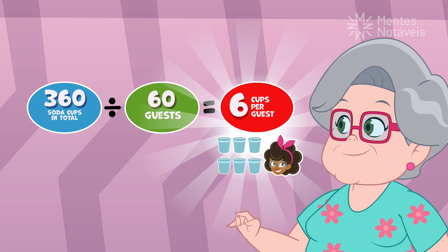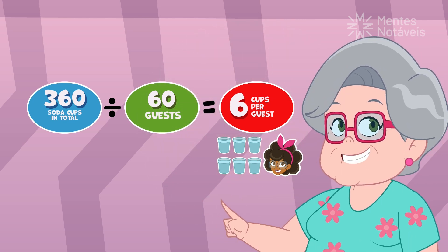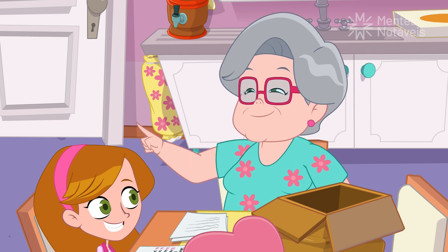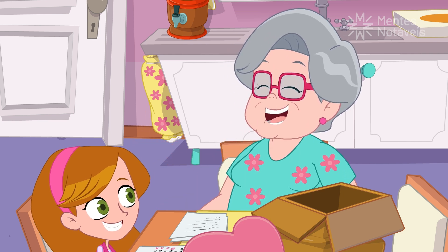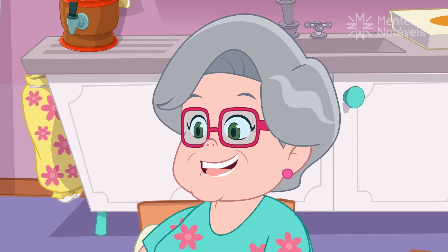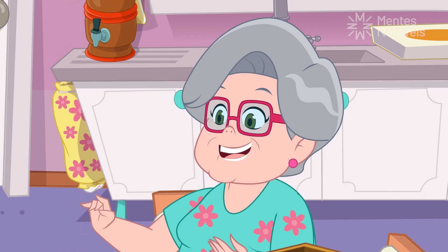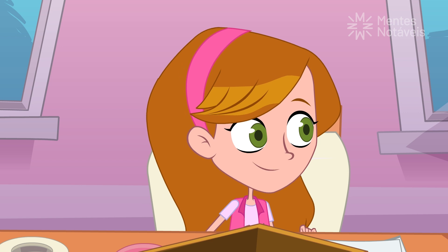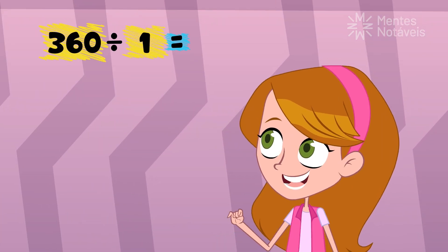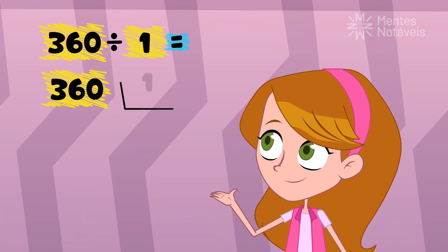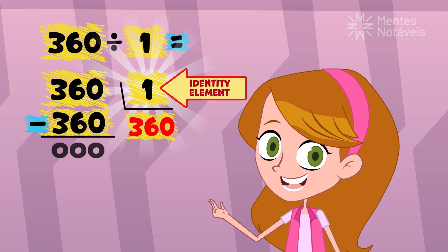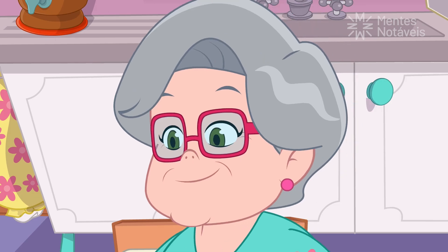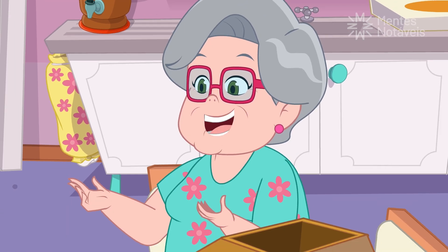That's perfect! But I bet you would want to drink all the soda, and in that case it would be a division by one. What's interesting is that in a division, the number one is also the identity element. If I do 360 divided by one, the result is still 360. Good job, Sophia! And that applies to any number we divide by one.